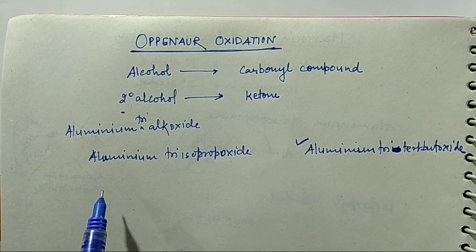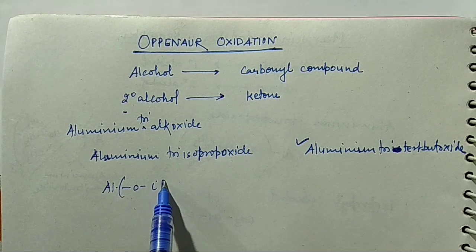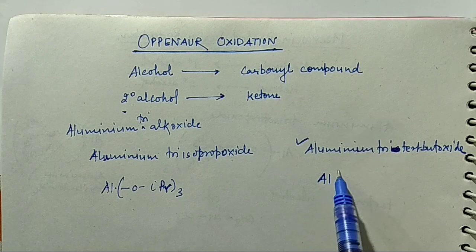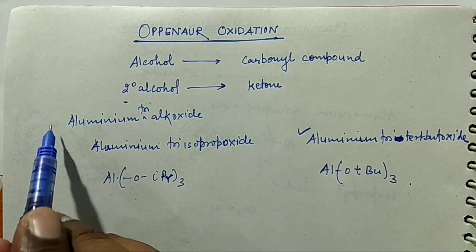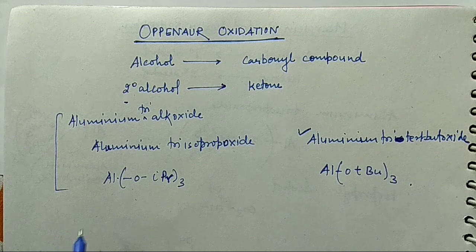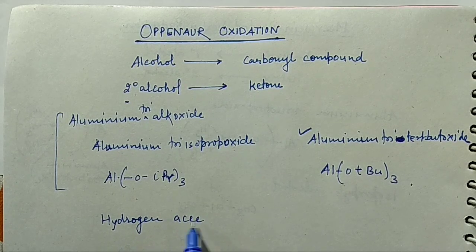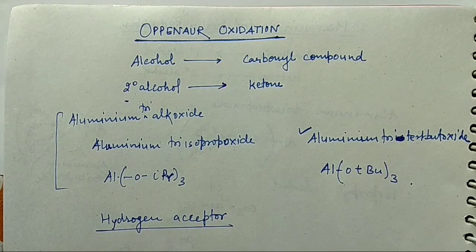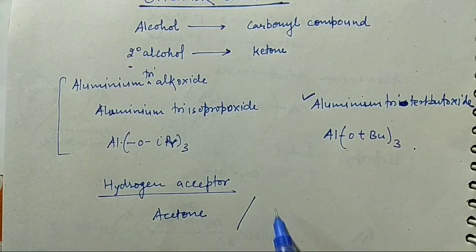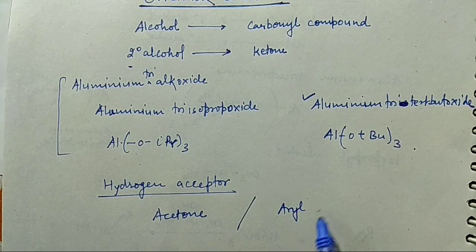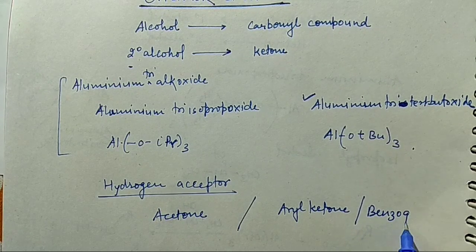So what happens in this reaction — the structure of Aluminium Tri-Isopropoxide has isopropoxide groups thrice on aluminium, and Aluminium Tri-Tertiary Butoxide has tert-butoxide groups. Apart from Aluminium Tri-Alkoxide, we need a hydride acceptor which can accept hydride from the alcohol. These hydrogen acceptors are generally acetone, but we can also use aryl ketone or benzoquinone. Benzoquinone is a very good hydride acceptor.